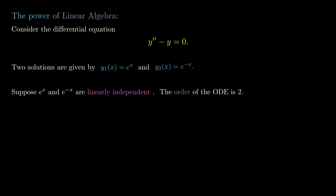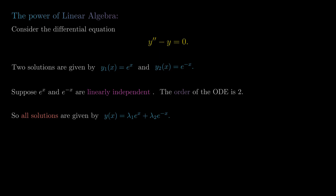We have a two-dimensional vector space with two linearly independent vectors. So the vectors eˣ and e^(-x) form a basis for the set of solutions to this ordinary differential equation, and in particular all solutions are going to be given by y(x) = λ₁eˣ + λ₂e^(-x).